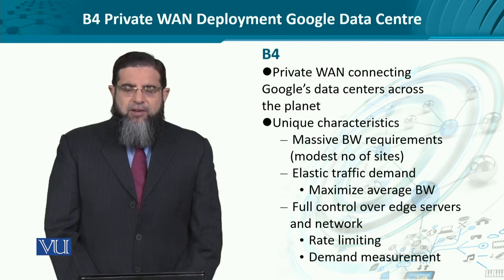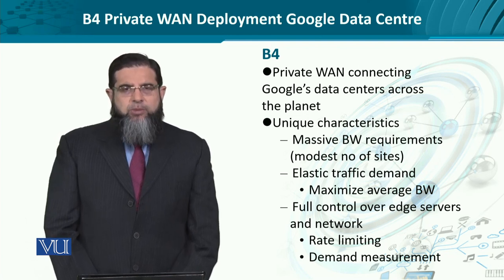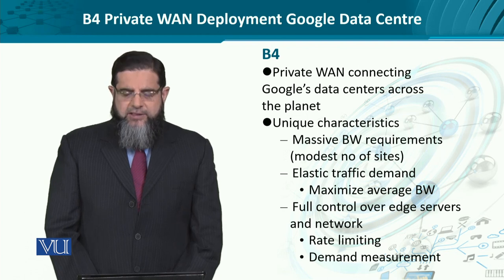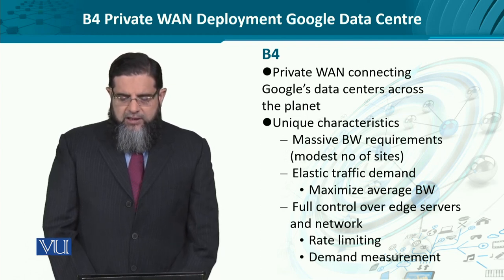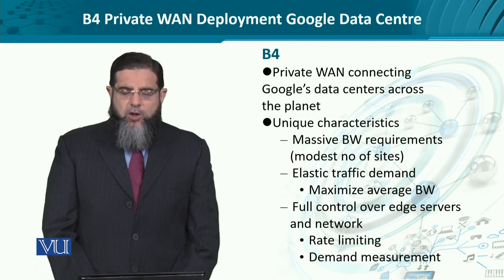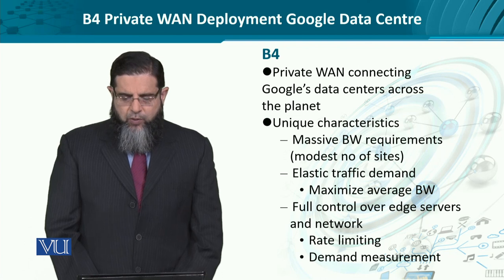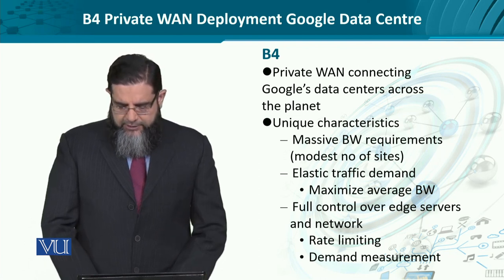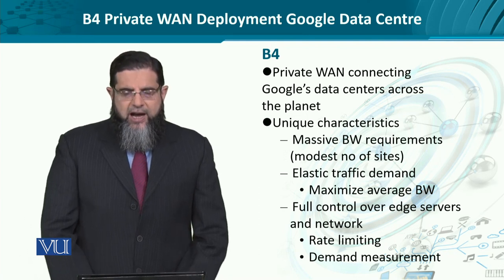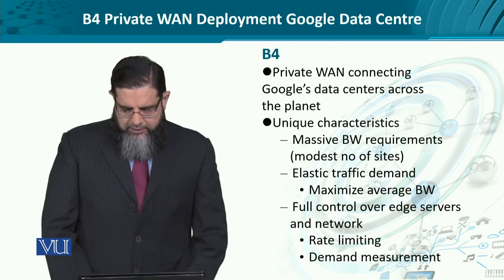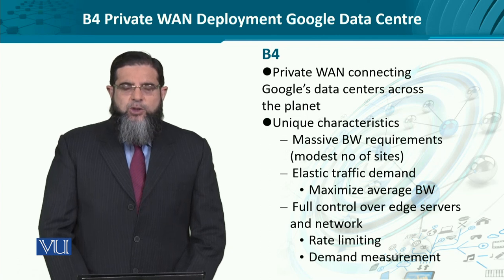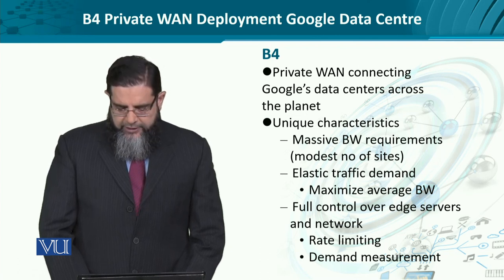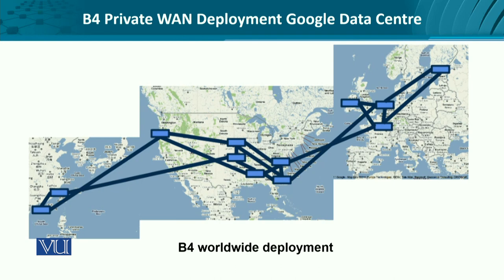Traffic utilization had to be maximized while minimizing the overall bandwidth requirement. At the same time, Google wanted to have control over the edge servers for rate limiting — that is, traffic engineering and measurement of the demand, which actually originates at user requests but realizes into data center originated or data center destined traffic.